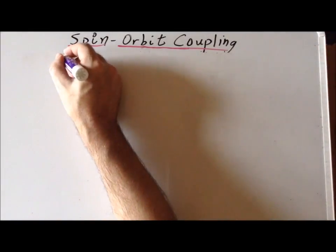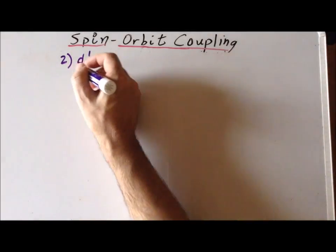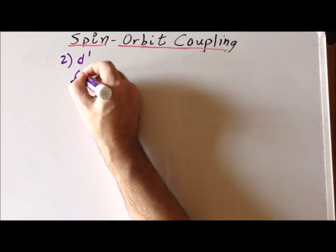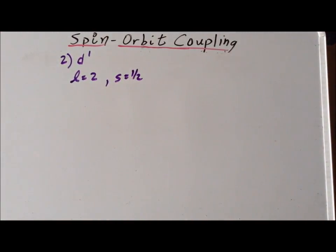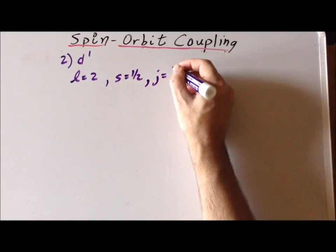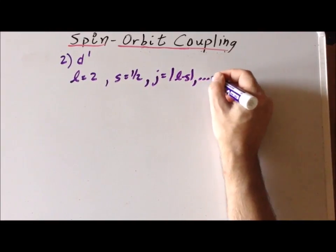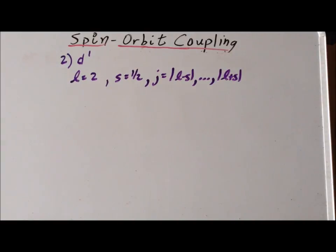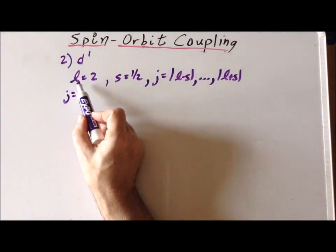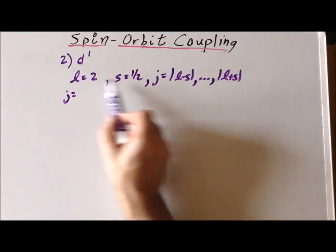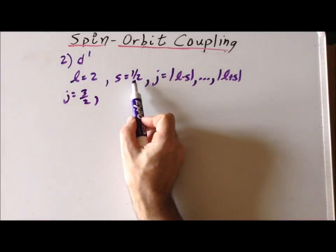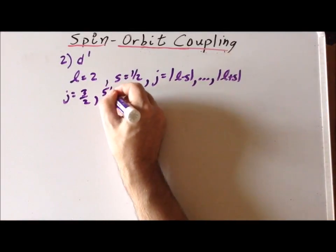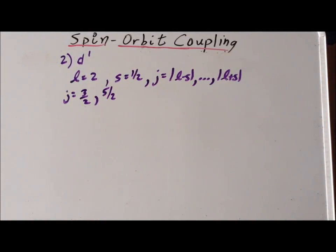Our second example is the case of d1. Since we have a d orbital, the L value equals 2. Since we have just one electron, S=1/2. The possible J values go from |L−S|=|2−1/2|=3/2 up to L+S=2+1/2=5/2. So, as expected for one electron in a non-s orbital, we have exactly two J levels: J=3/2 and J=5/2.